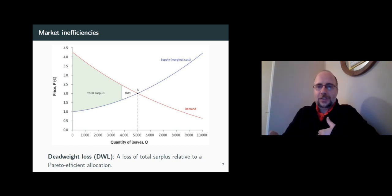So any allocation away from point A creates an opportunity for mutual gains, for lowering the deadweight loss, for moving to an efficient market allocation.